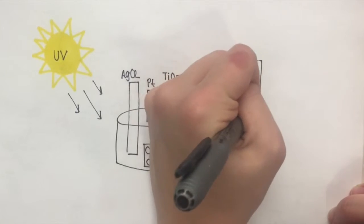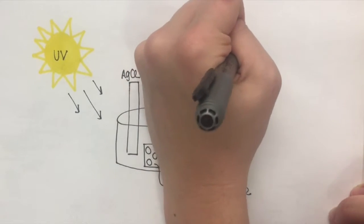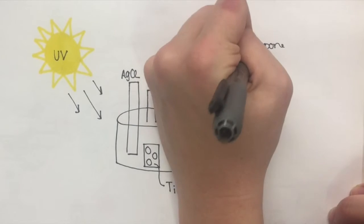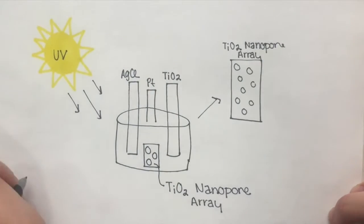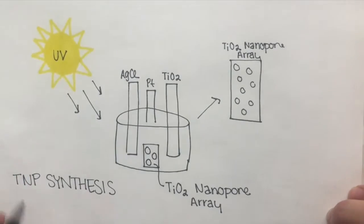The more porous arrays have more surface area, thus allowing for more reactions to take place on the surface of the arrays. This increase in reactivity yields a greater functionality of splitting the water molecules and ultimately greater rates of contaminant degradation.